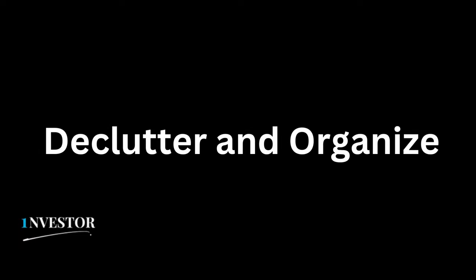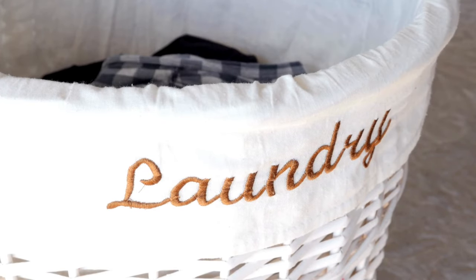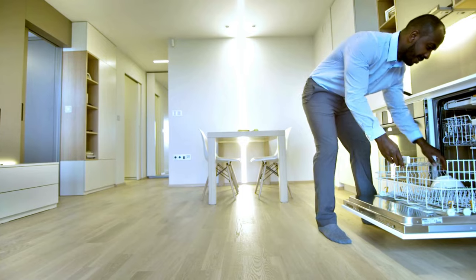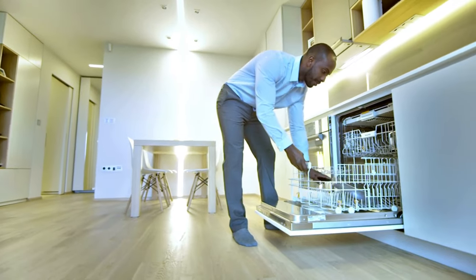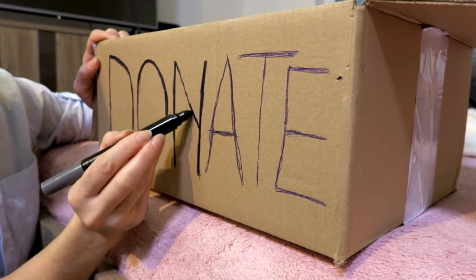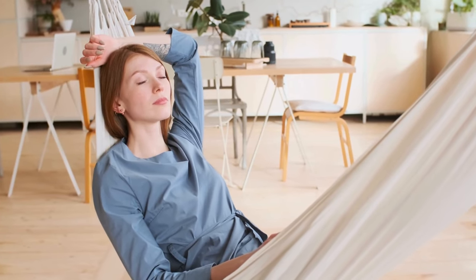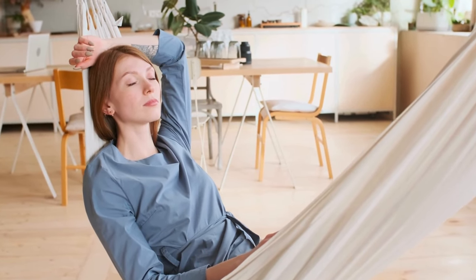Once you've tidied up the surfaces, it's time to declutter and organize. Grab that laundry basket and start filling it with items that don't belong in the room. Then find a home for each item, whether it's another room, a donation box, or the trash. As you go, remember the rule: if you haven't used it in the past six months and it doesn't hold sentimental value, consider getting rid of it. Less clutter means less stress.